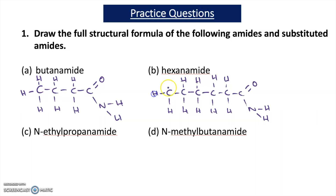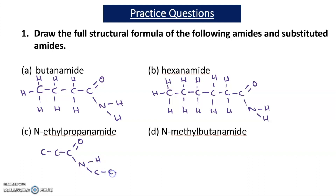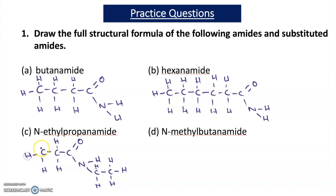For part C, I'm asked to draw the structural formula of N-ethyl propanamide. I draw three carbons first, then a C=O, and instead of NH2 I put NH and a C2H5 group because that's the ethyl group. In a substituted amide, one of the hydrogens in the NH2 group is replaced by an alkyl group — in this case C2H5 because it's N-ethyl. Fitting the hydrogens around gives the final structure for N-ethyl propanamide.